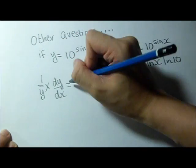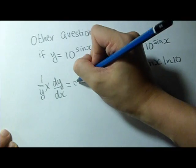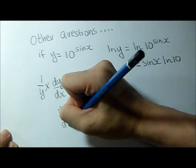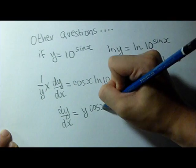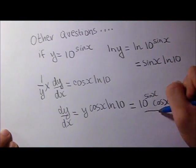1 over y times dy/dx equals cos x ln 10, as we follow the same procedure, and then we multiply it by y, which means that we multiply it by 10 sine x. So it's 10 sine x cos x ln 10. That's our final answer.